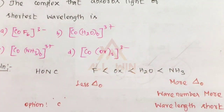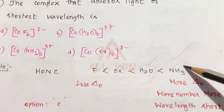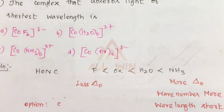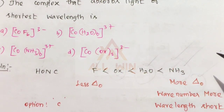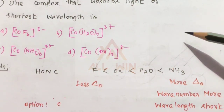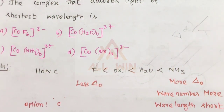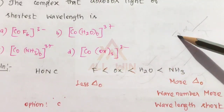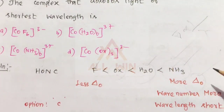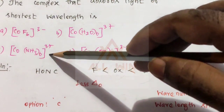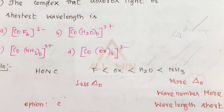We will talk about the strong ligands and how they relate to the absorption of light. Strong field ligands produce a larger crystal field splitting.